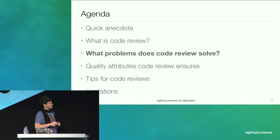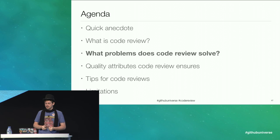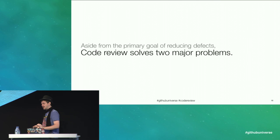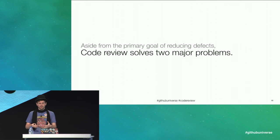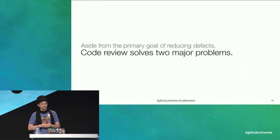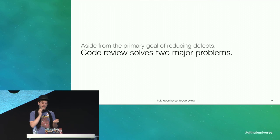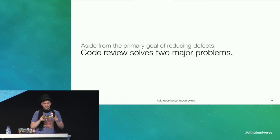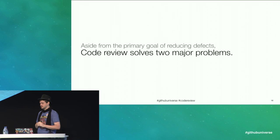Next, let's talk about some of the problems that code review solves. It's pretty clear that the primary goal of code review is to find defects before they enter the maintained code base. However, there are two human problems that code review also solves.